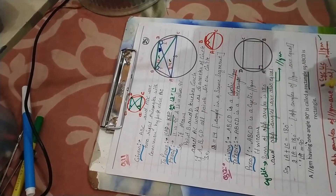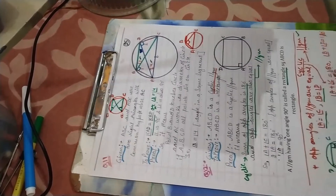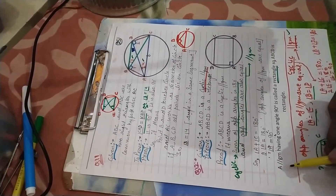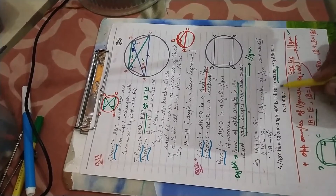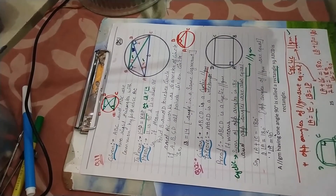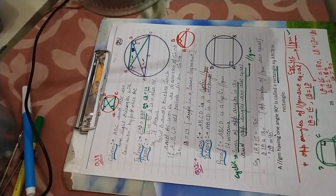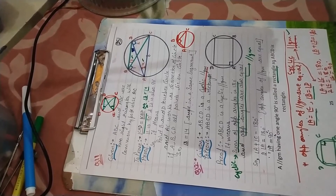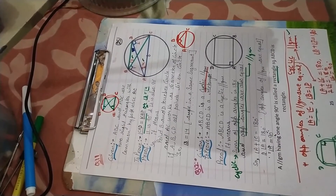One angle is 90° in the given parallelogram, so it is a rectangle. According to the definition, a parallelogram having one angle of 90° is called a rectangle. Therefore, ABCD is a rectangle. Is it clear? Does anyone have any doubts?